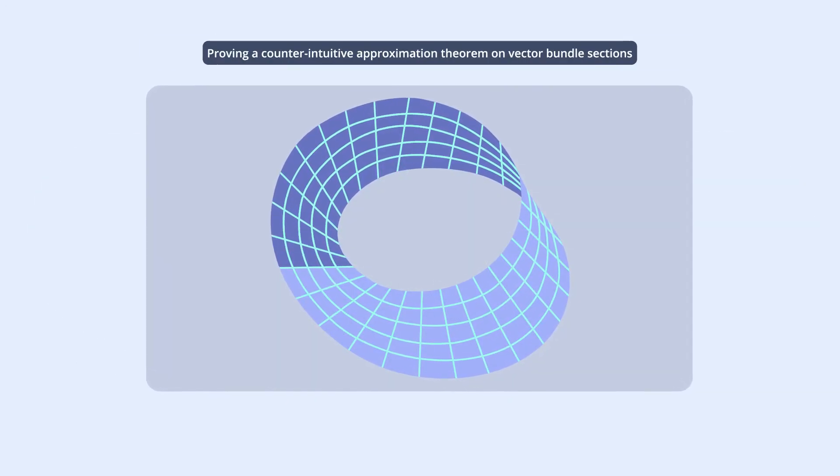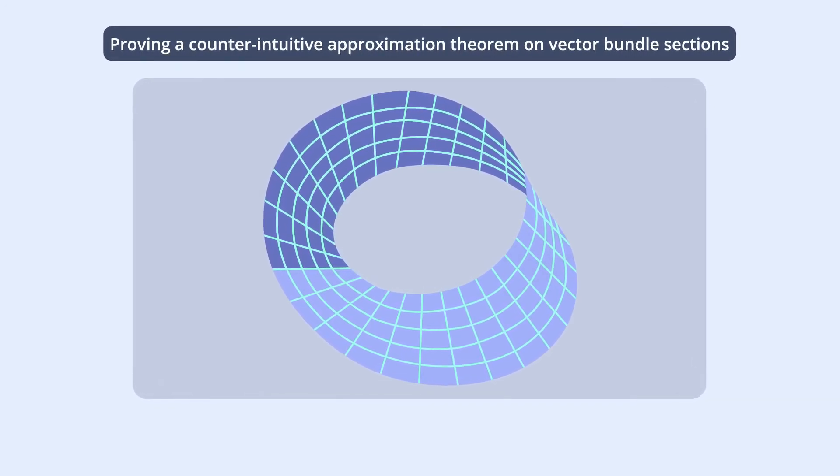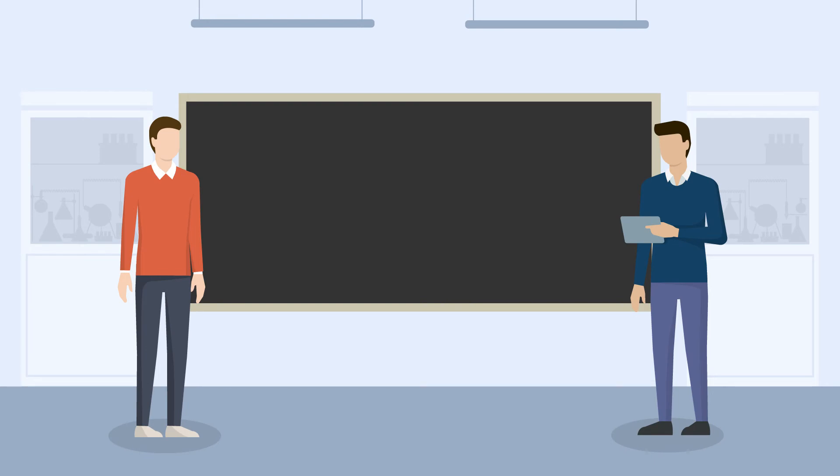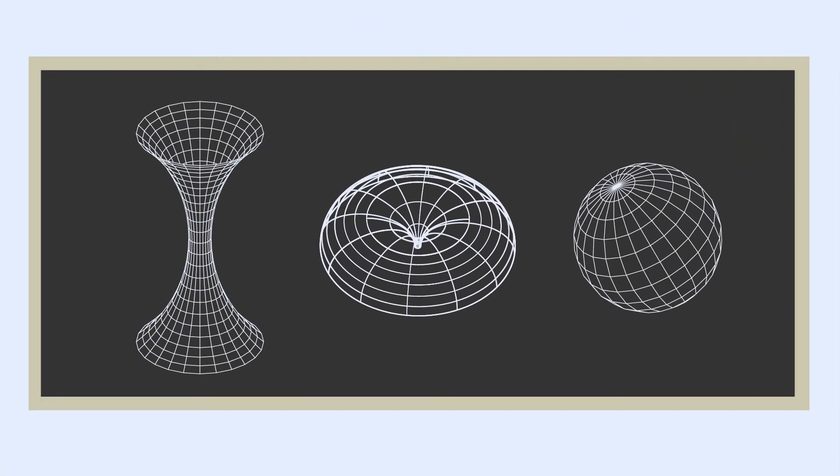In addition, they used the result to prove a counterintuitive approximation theorem on vector bundle sections and showed, as an example, the existence of C11 metrics of constant curvature on open-dent subsets of an arbitrary manifold.